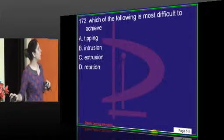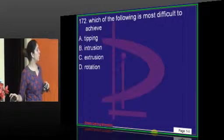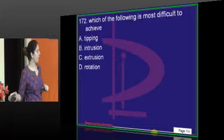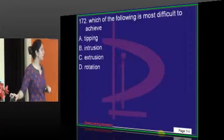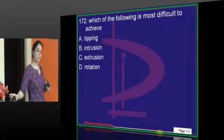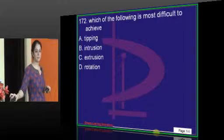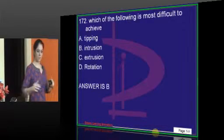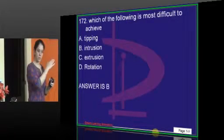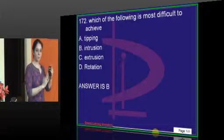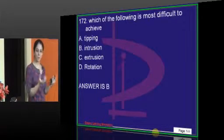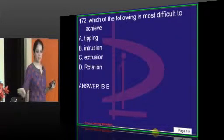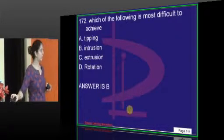The most difficult tooth movement to achieve is intrusion. Rotation is easy, tipping is easy, and extrusion is very easy. Remember: the maximum amount of force is felt at the apex during intrusion, which is why it is the most difficult.